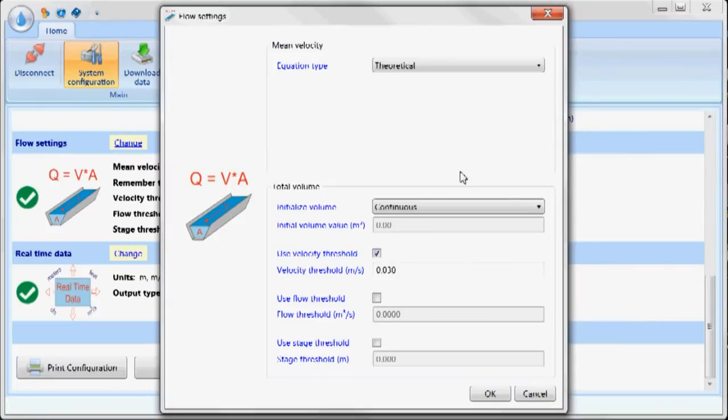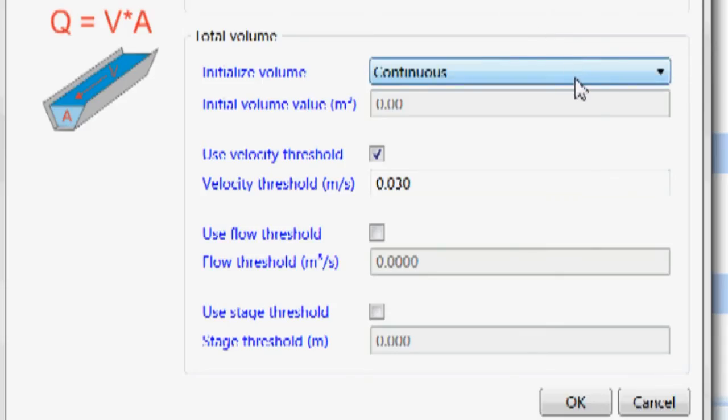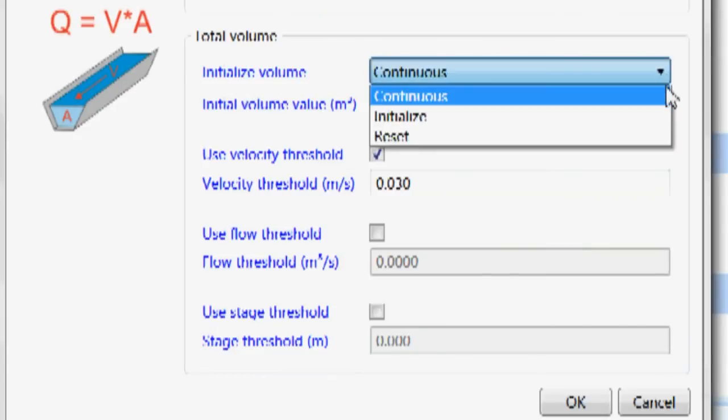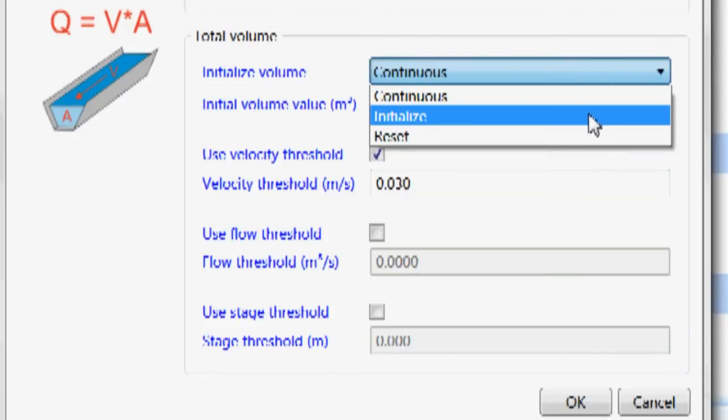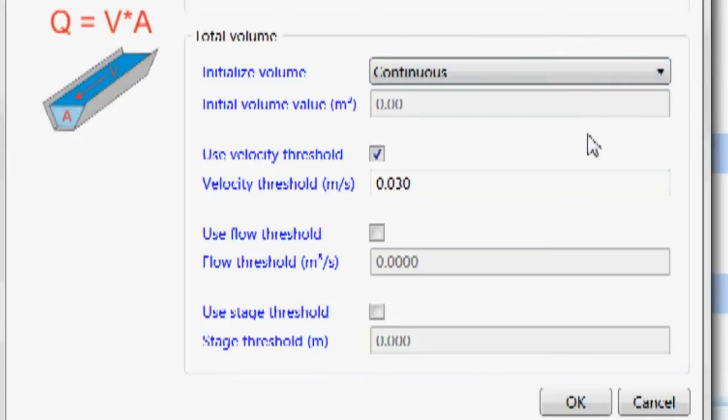Now to calculate total volume, I can initialize the volume. If I want to initialize it or reset it, I can set if I want to start from the beginning. I'll want to initialize it or reset. But in this case, I'm going to leave it at continuous. I can give it initial volume if I want.